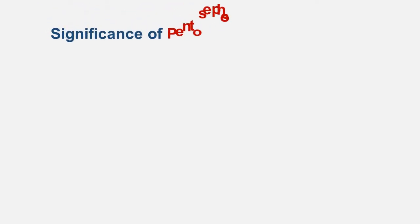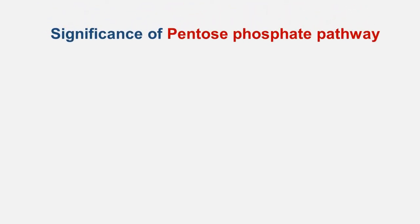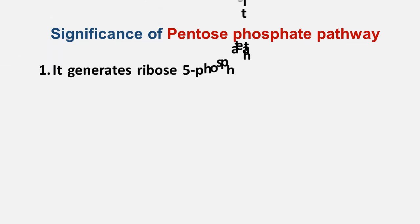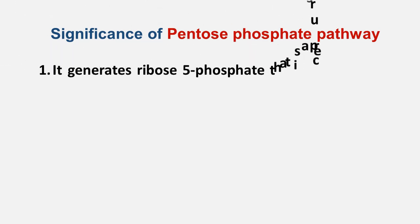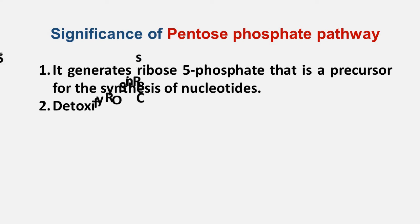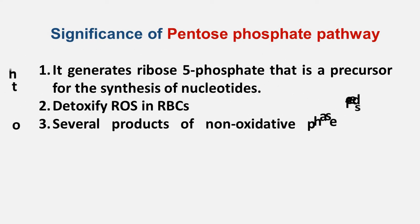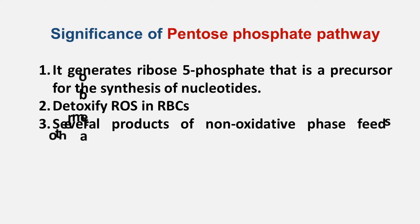The question arises: why does this pathway take place? There are three basic reasons. First is the production of pentose sugar to enter into the nucleotide synthesis pathway. Second is to detoxify reactive oxygen species in erythrocytes, or red blood corpuscles. Third is that several products of the non-oxidative phase feed other metabolic pathways of the body.